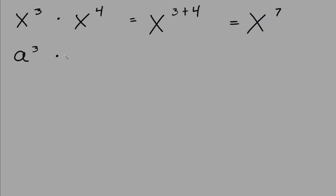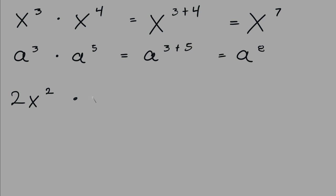Let's say you had a to the power of 3 multiplied by a to the power of 5. This is the same as saying a to the power of 3 plus 5, which equals a to the power of 8. And if you had a coefficient in front of the variable, like 2x squared multiplied by 2x to the power of 3, you would multiply the coefficients: 2 times 2 is 4. Then add the exponents: 2 plus 3 is 5. So the answer is 4x to the power of 5.